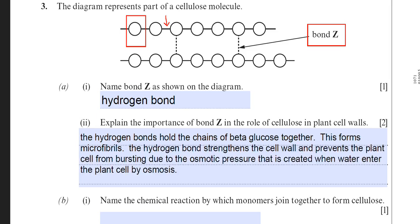I've just added in the second part of the answer, saying that the hydrogen bonds strengthen the cell wall and prevent the plant cell from bursting. That of course is due to osmotic pressure that's created when water enters the plant cell by osmosis. So that's a reasonable description and explanation of the importance of bond Z for plant cells.